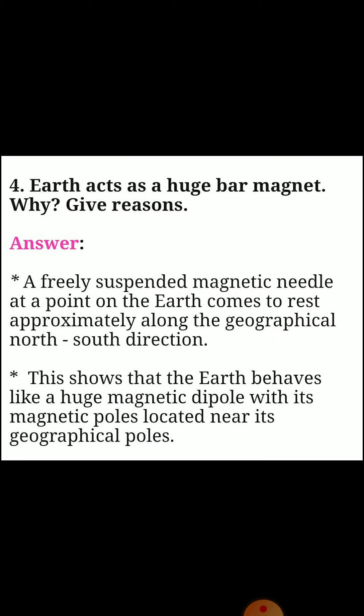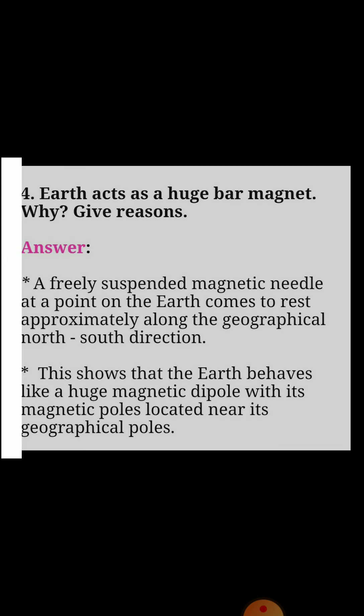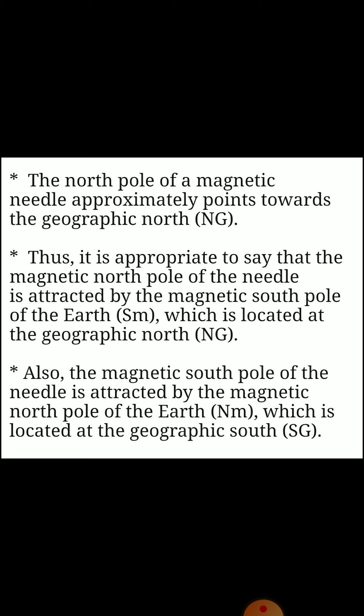Fourth one: earth acts as a huge bar magnet — why? Give reasons. Answer: a freely suspended magnet needle at a point on the earth comes to rest approximately along the geographical north-south direction. This shows that the earth behaves like a huge magnetic dipole with its magnetic poles located near its geographical poles. The north pole of a magnetic needle approximately points towards the geographic north.